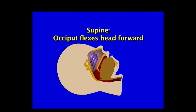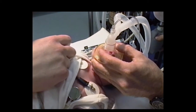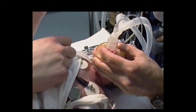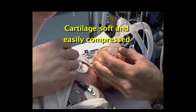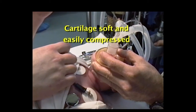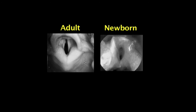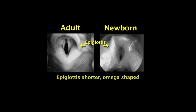When supine, the large occiput flexes the head forward, collapsing the tongue and soft tissues over the larynx and blocking the airway. The cartilage composing the trachea is soft and easily compressed. Extreme extension or flexion of the child's neck can obstruct the airway. In fact, pressing on the soft tissue under the chin to get a good mask fit can also obstruct the airway. The larynx is not only smaller than the adult's, it's also anatomically different. The epiglottis is shorter and more omega-shaped, making it harder to pick up with the laryngoscope blade. It's softer and more easily deformed.